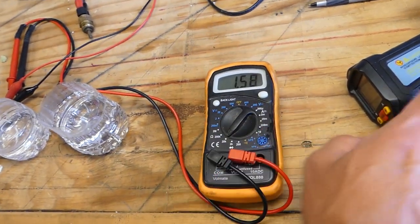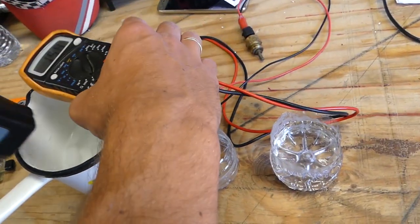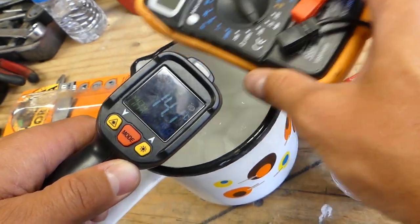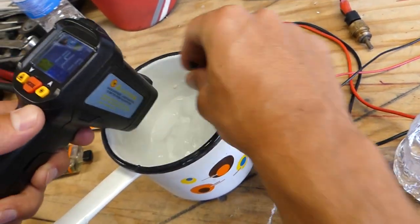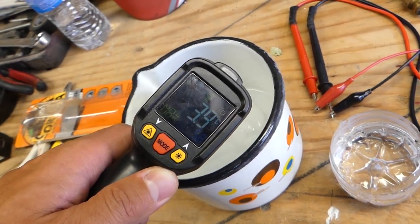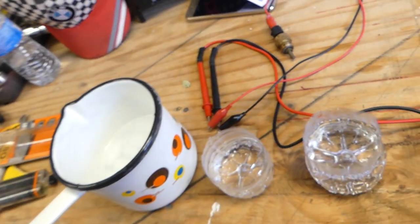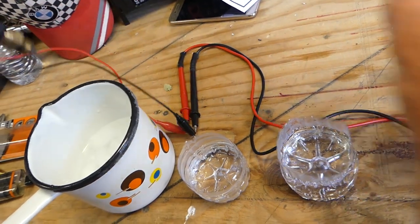What we did here is prepare some ice cold water and we'll test it in Celsius. Let me stir the water up a little so we can get an accurate reading. It's about 5 degrees Celsius, which is about 40 to 42 Fahrenheit. Now I'm going to dip the sensor in this ice cold water.